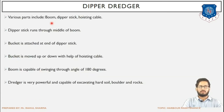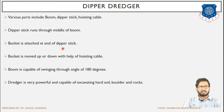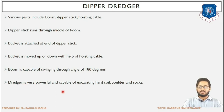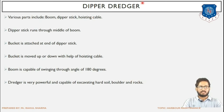Parts of the dipper dredger include the boom, dipper stick, and hoisting cable. The dipper stick runs through the middle of the boom and is perpendicular to it. The bucket is attached at the end of the dipper stick. The bucket is moved up and down by the hoisting cable. The boom is capable of swinging through an envelope of 180 degrees, controlling the direction. The dipper dredger is very powerful and capable of excavating hard soil, boulders, and rocks.